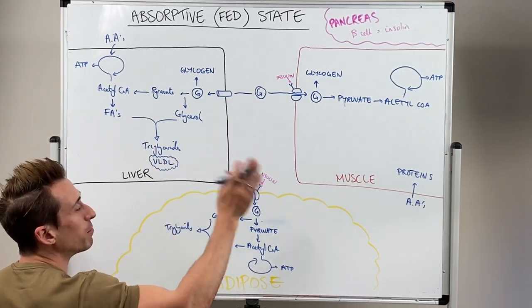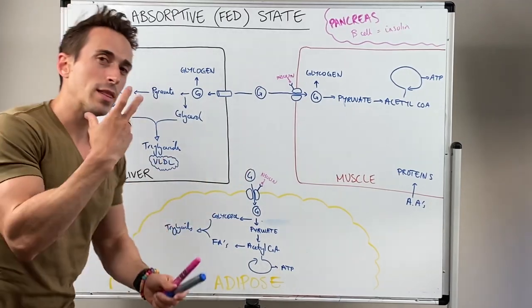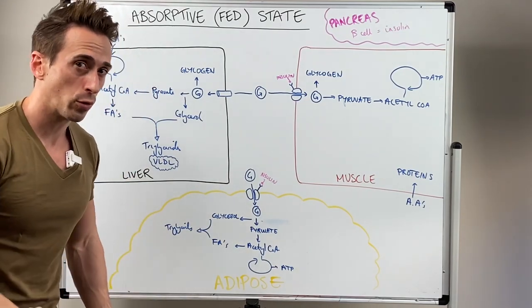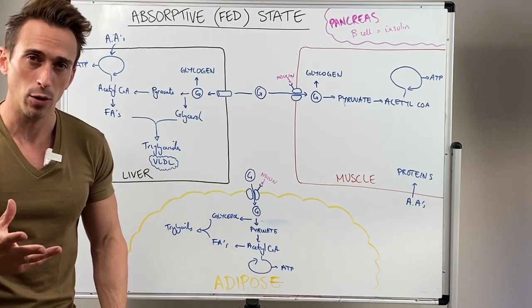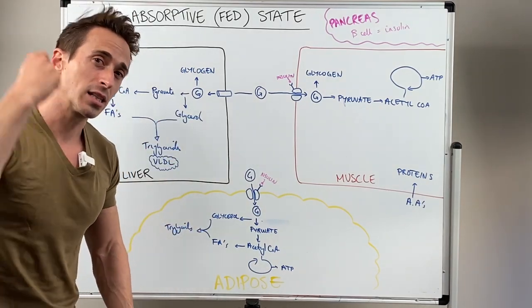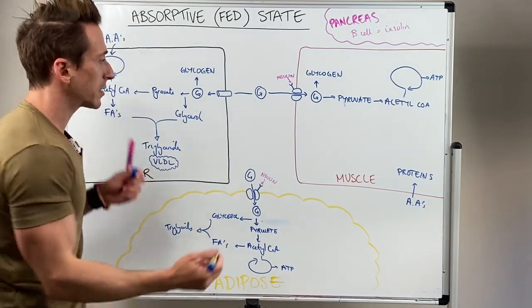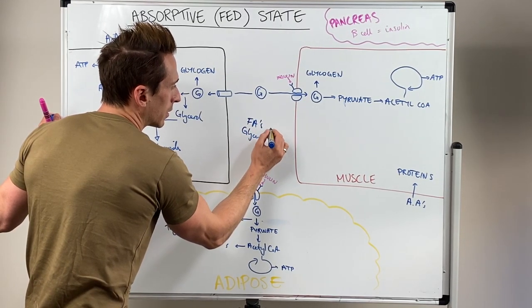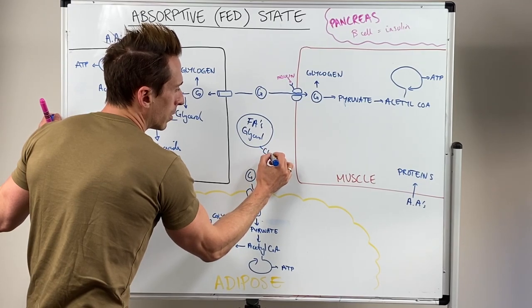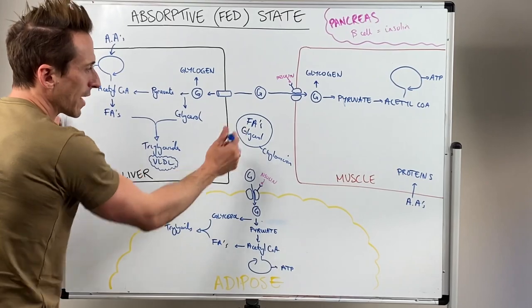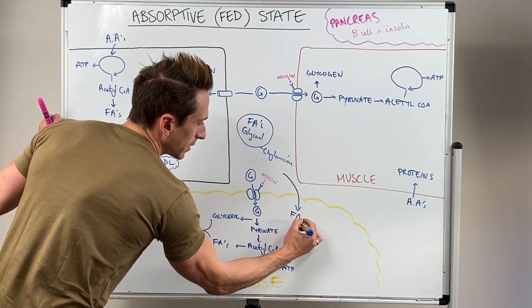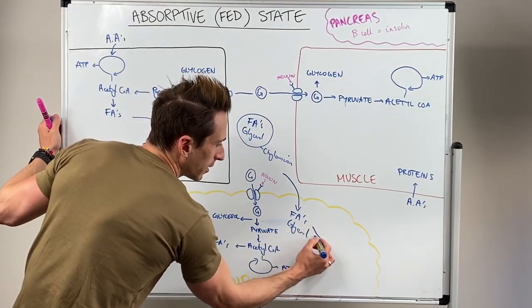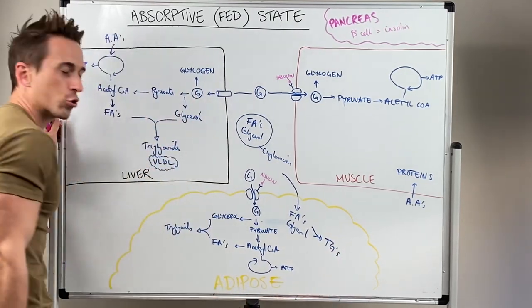But also, from the meal that we've eaten, the fatty acids and glycerol got absorbed into the lymphatic system, not the bloodstream, not the portal vein which most of these do, like glucose and amino acids. What happens is fatty acids and glycerol into the portal vein get put together into something called a chylomicron. And that chylomicron can deliver fatty acids and glycerol to the adipose tissue, which again can be stored as triglycerides.